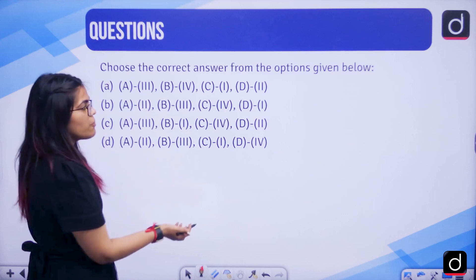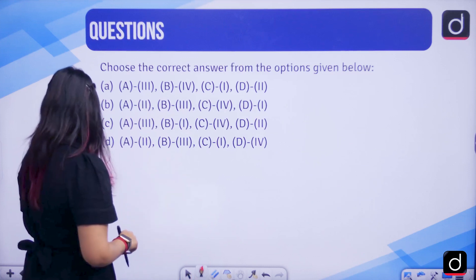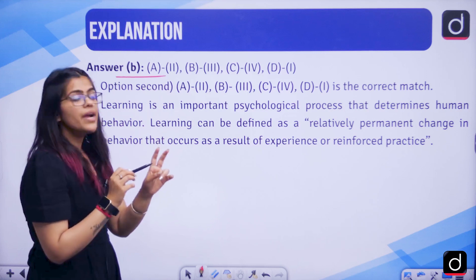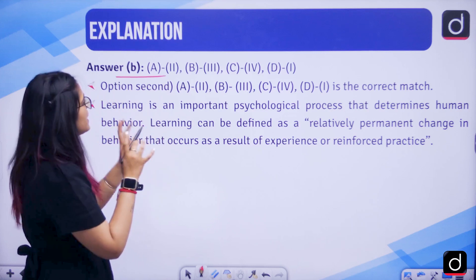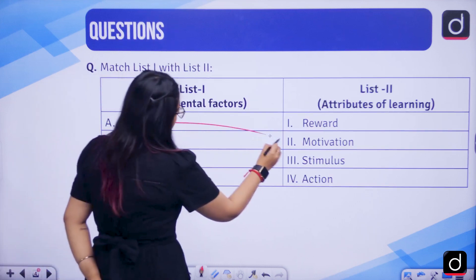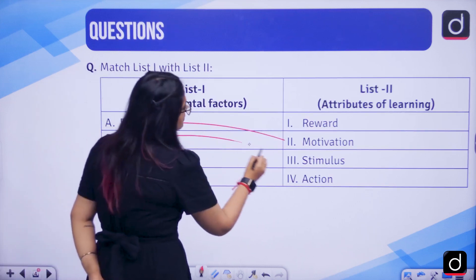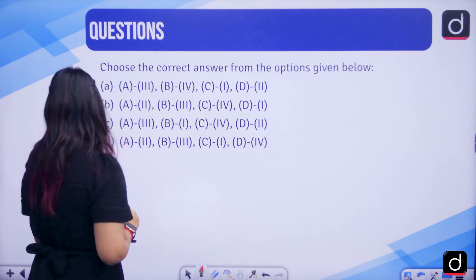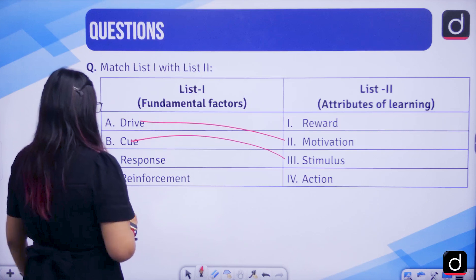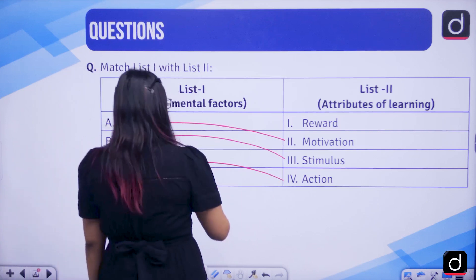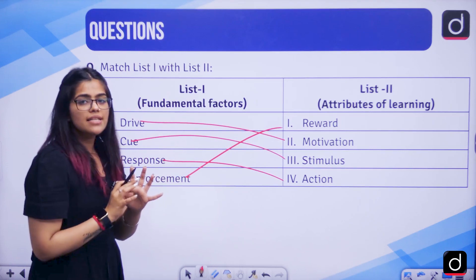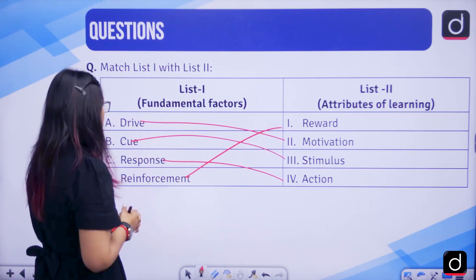These were your options. The answer is B — A is joined with 2nd, B with 3rd, C with 4, and D with 1. It was an easy question. Let us understand the concept and you will understand this as well.